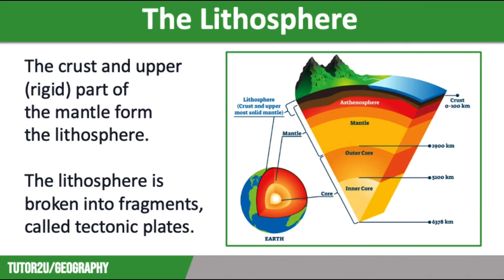The crust and the upper rigid part of the mantle form the lithosphere. The lithosphere is broken into fragments called tectonic plates, which move very slowly over the upper mantle. It is around 100km on average and it is solid and brittle, which means that it breaks under pressure — so this is where earthquakes occur.